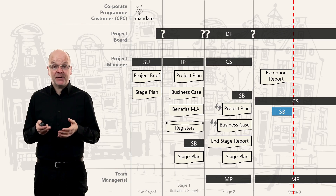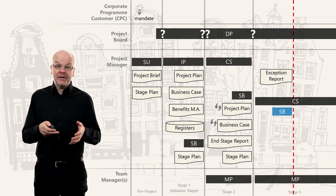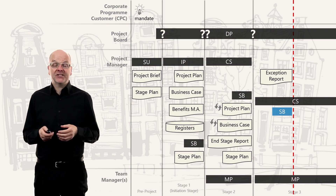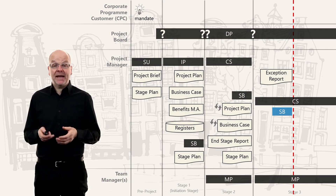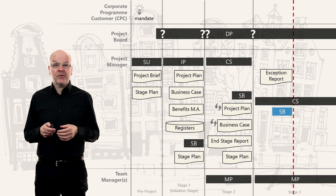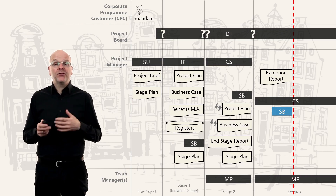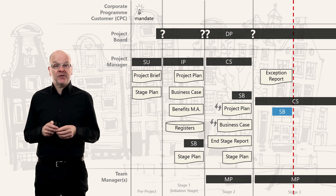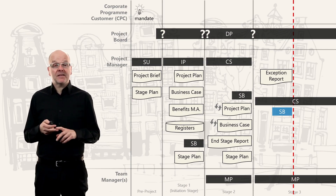If a new stage plan is needed, the project manager will start a stage boundary process to create it. The two documents updated in the stage boundary process are the business case and the project plan.